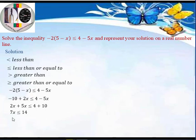We divide both sides by 7. Seven on the left goes into 7 one time, and 7 on the right goes into 14 two times. So we have x less than or equal to 2.